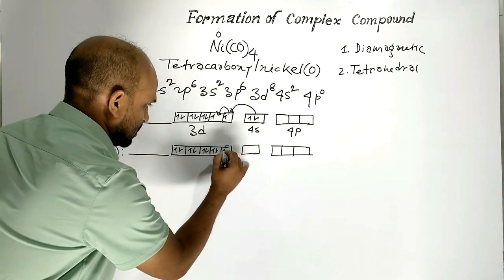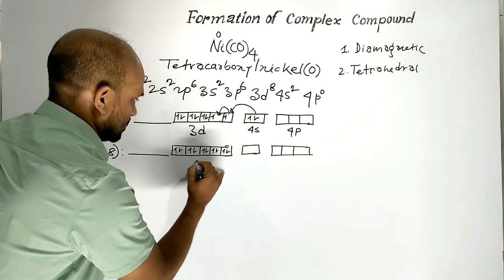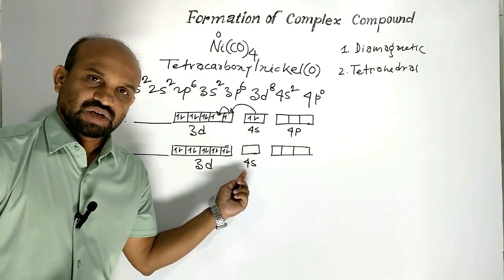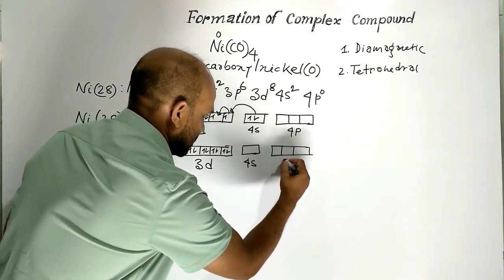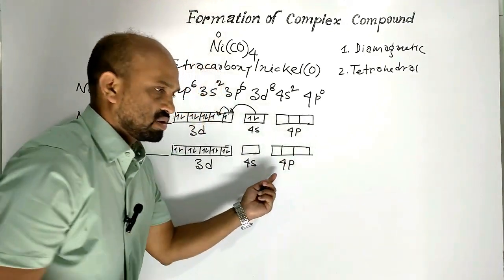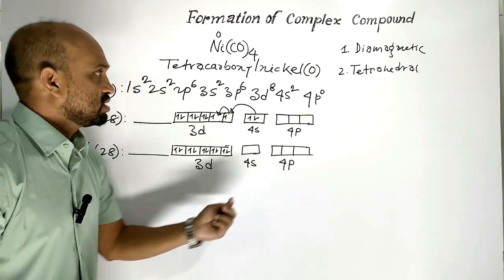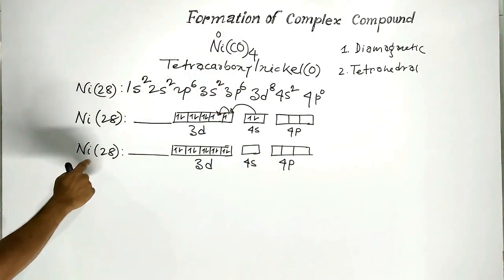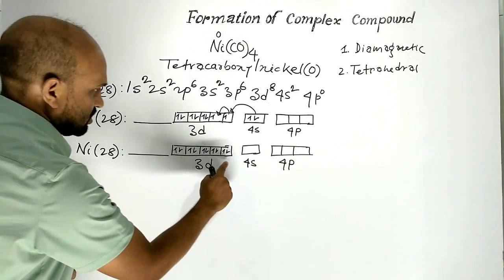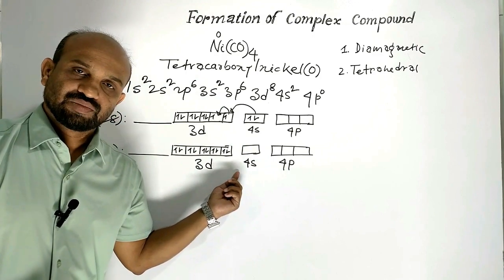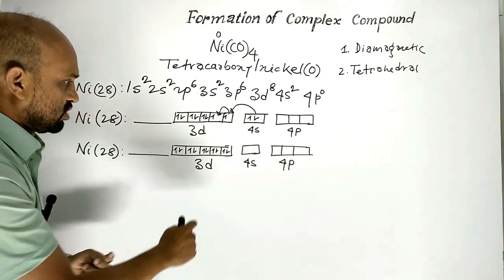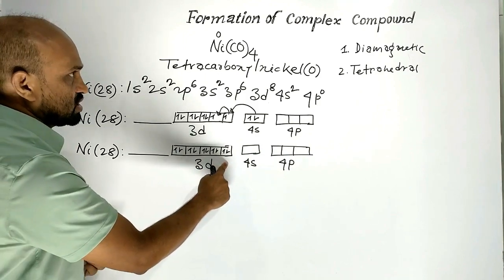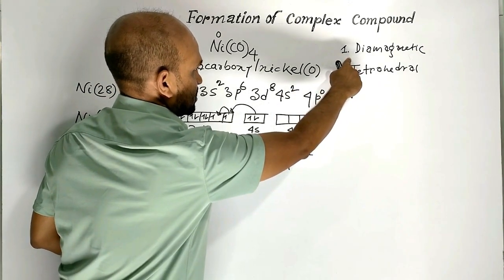After rearrangement, the 3d orbitals are fully filled, the 4s orbital becomes vacant, and the 4p orbitals are already vacant. When the carbonyl ligand approaches nickel, electrons rearrange in this way. Now there are no unpaired electrons, which is why tetracarbonyl nickel is diamagnetic in nature.